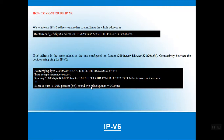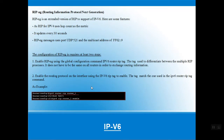Next, we configure RIPng — Routing Information Protocol Next Generation — which is a distance vector protocol that finds the best route to reach a destination. Configuring RIPng requires at least two steps: enable RIPng using the global configuration command, and enable the routing protocol on the interface using IPv6. The command used is 'ipv6 router rip Router1', which configures RIPng on the router.